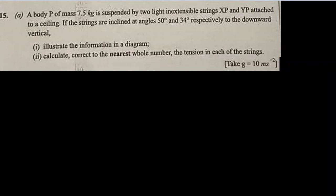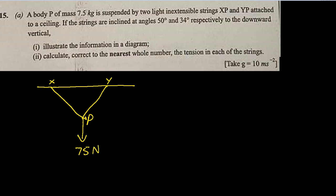Problem 15, part A: A body P of mass 7.5 kg is suspended by two light inextensible strings XP and YP. We have X here, Y here, and P somewhere here. This is body P with mass 7.5 kg, meaning the force downwards is 75 newtons. The strings are inclined at 50 degrees and 34 degrees respectively to the downward vertical. This one is 50 and this one is 34. Part one asks to illustrate the information in a diagram, and we've done that.